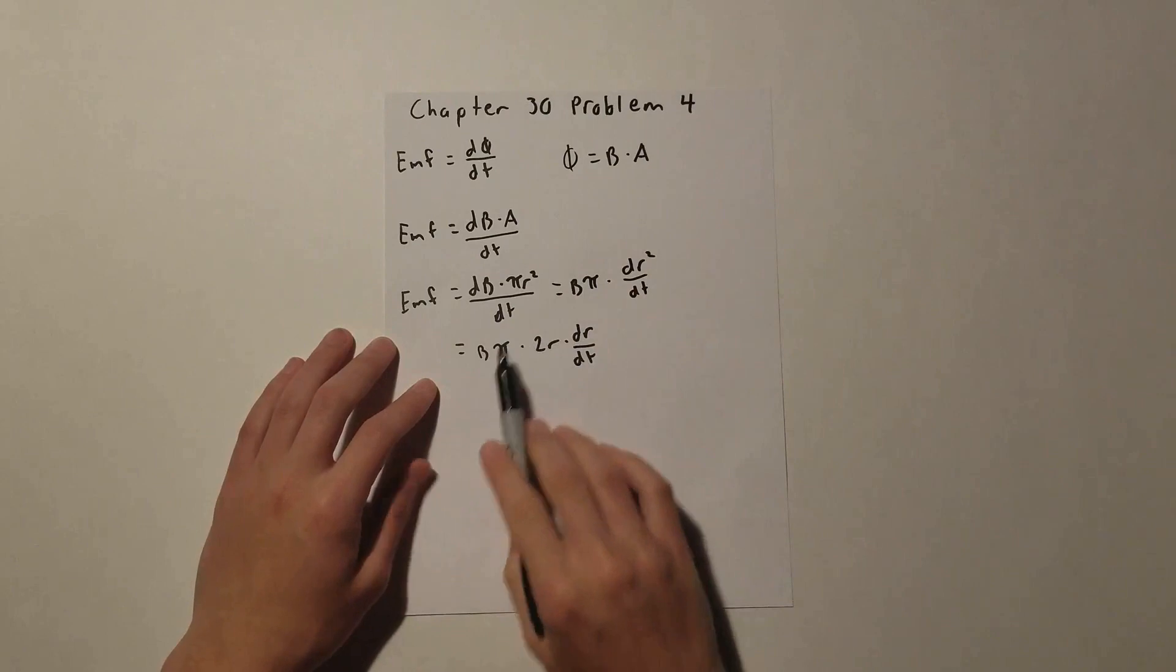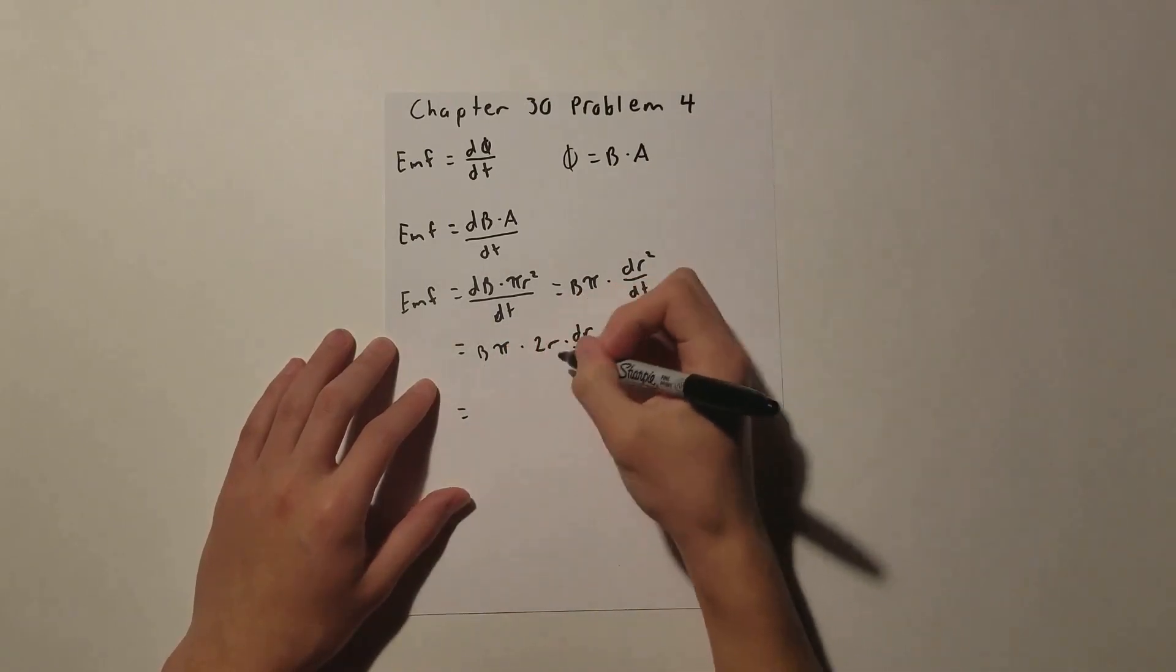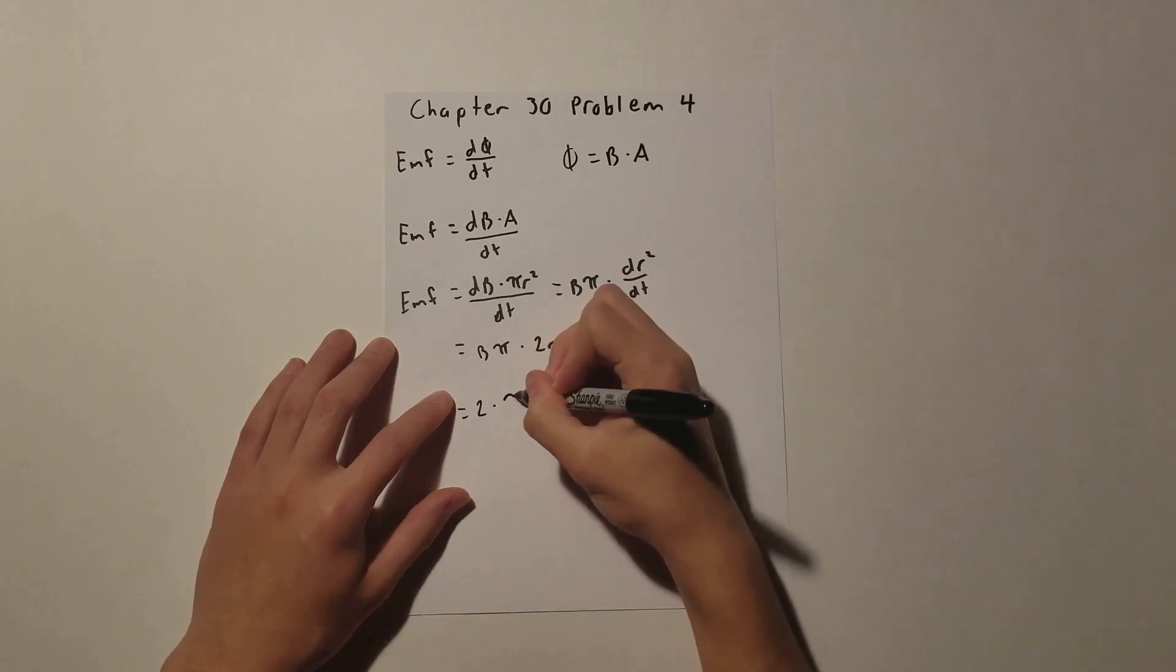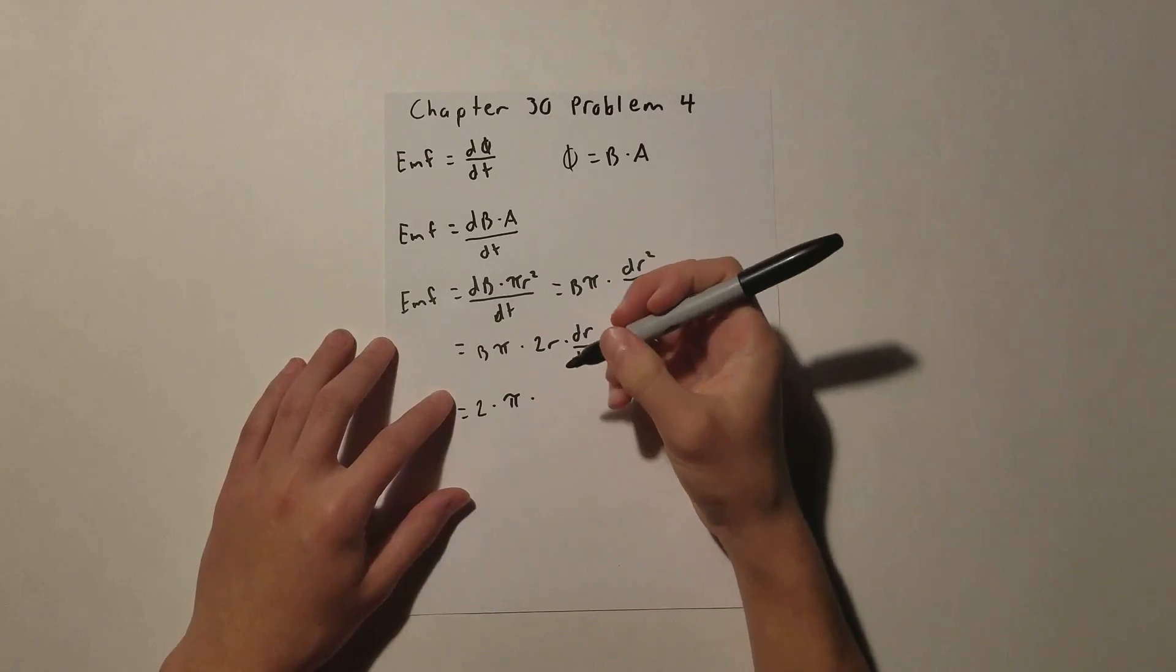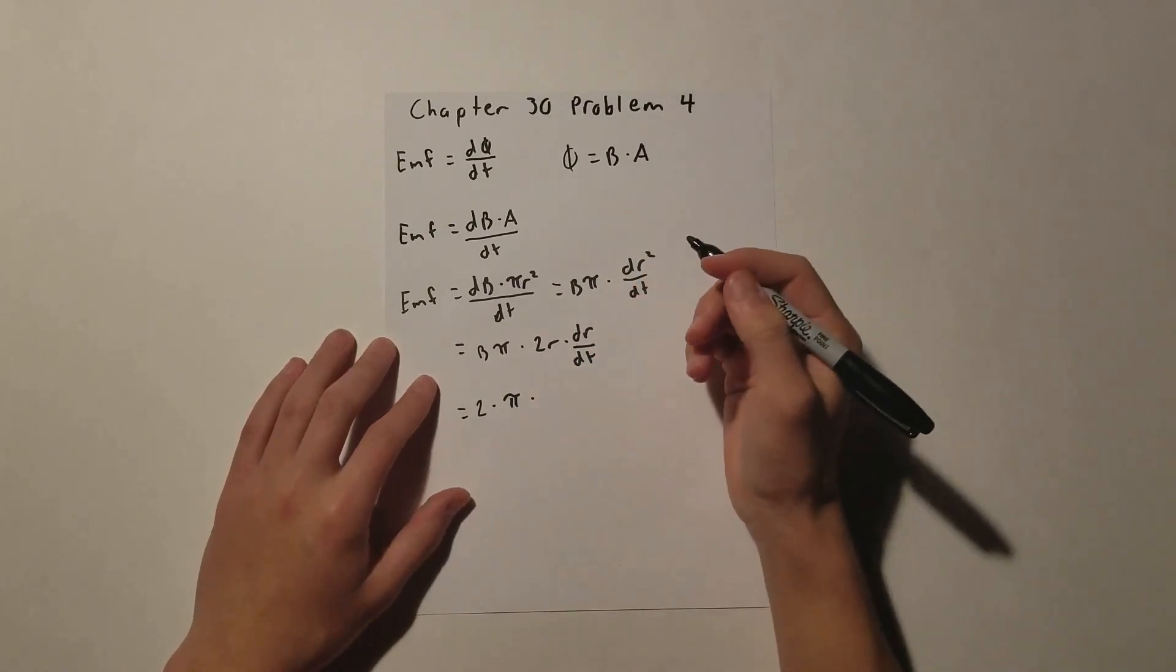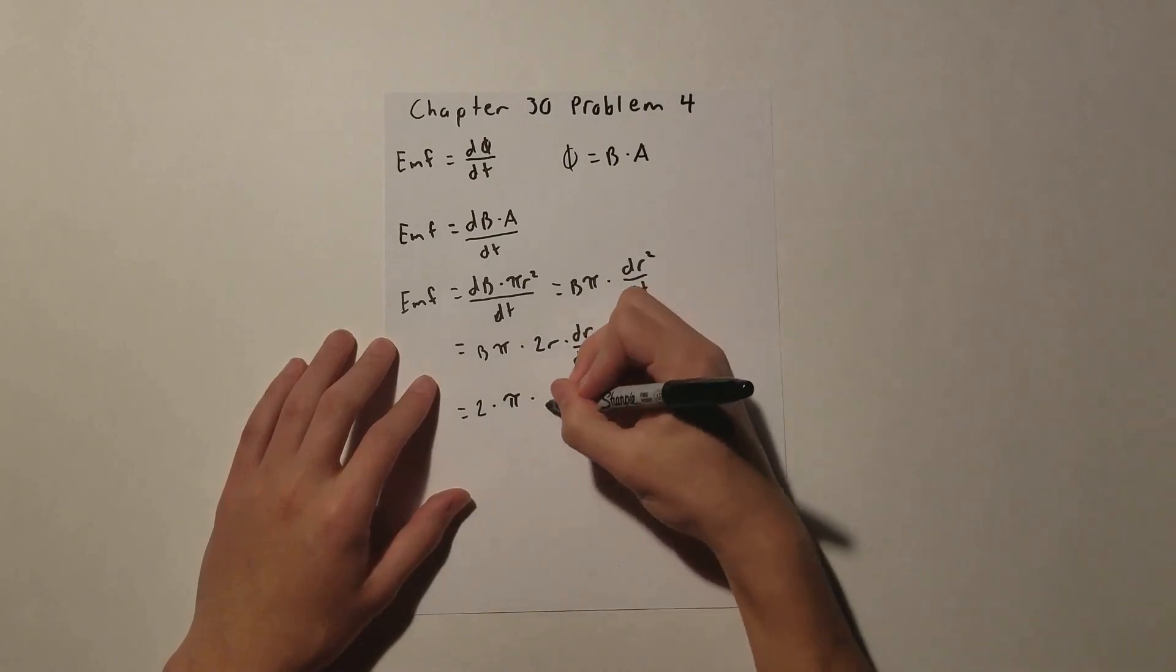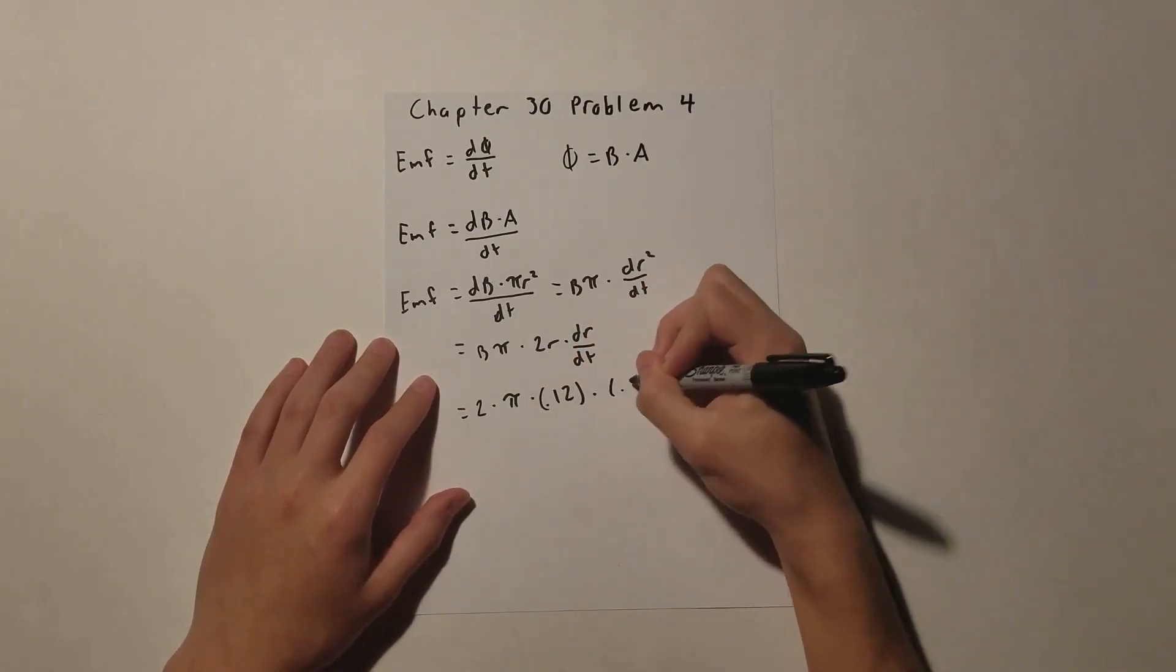We know all these values in the problem. So we have 2 times pi times, our radius is given as 12 centimeters, but we have to remember we need to convert that to meters. So 0.12, and then the magnetic field we are given as 0.8.